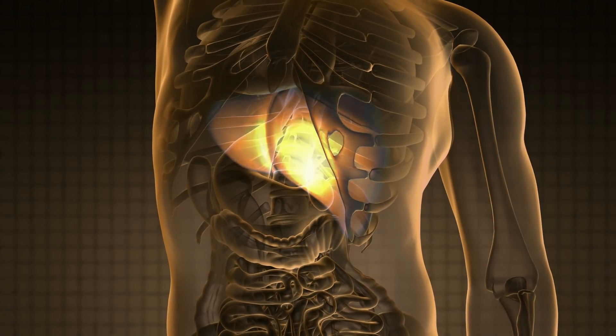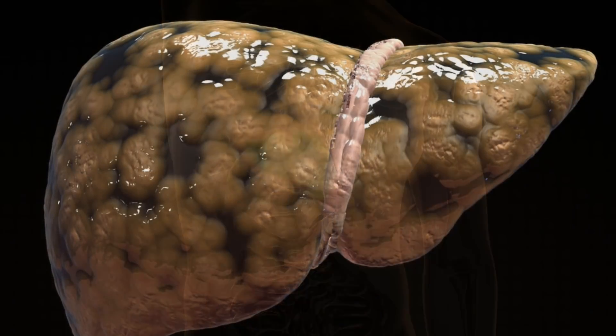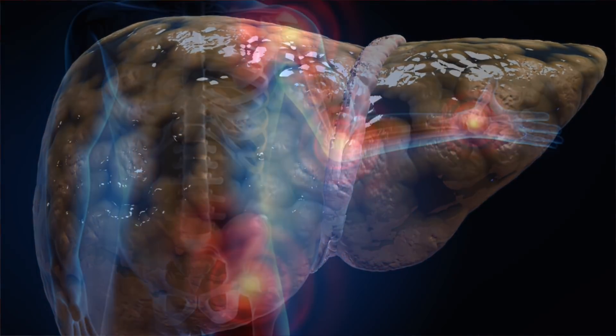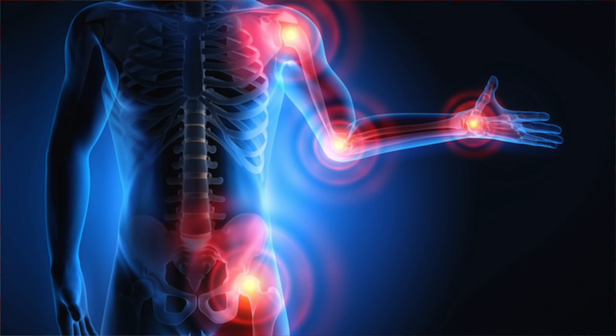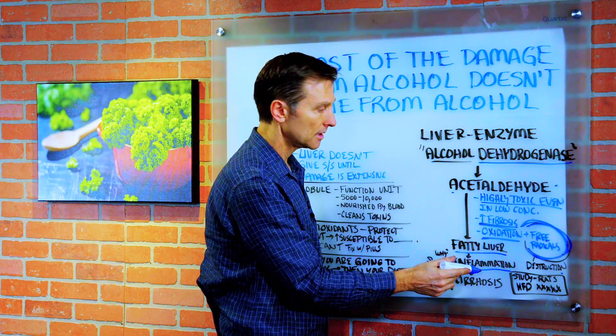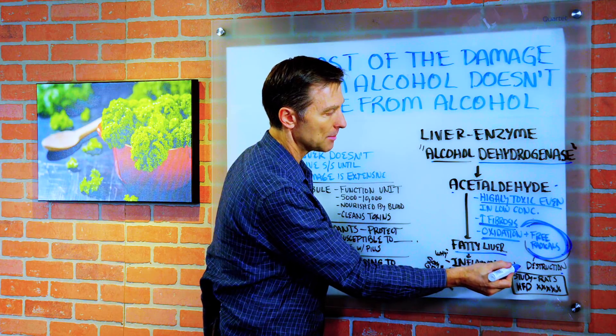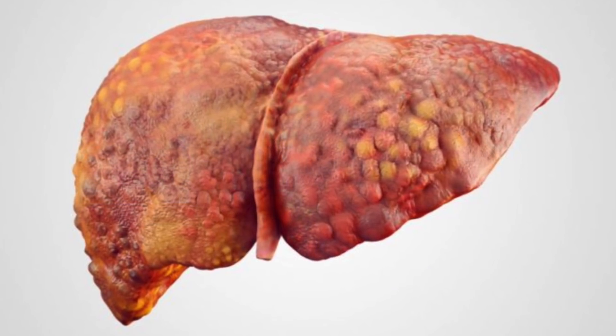So then you have a sequence of things that happen. You develop a fatty liver. Then you get inflammation. And the inflammation is there because the body is trying to heal something. What is it trying to heal? The damage to the liver. Then scar tissue develops and you get cirrhosis.